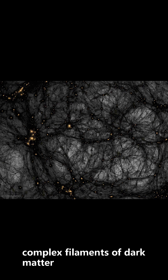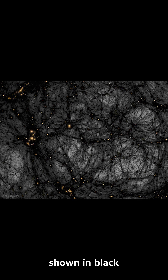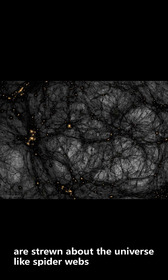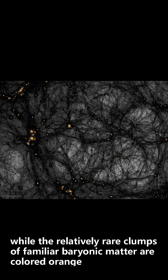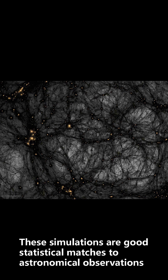complex filaments of dark matter, shown in black, are strewn about the universe like spider webs, while the relatively rare clumps of familiar baryonic matter are colored orange. These simulations are good statistical matches to astronomical observations.